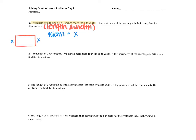Remember, the right side and the left side are the same. Then it says our length is six inches more than the width. Remember, six inches more — 'more than' means plus. So whatever our width is, we're going to be six inches more. So our length is X plus six.